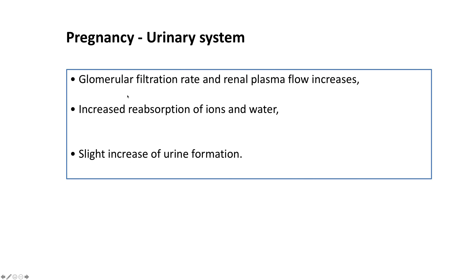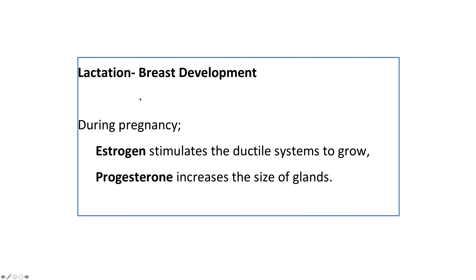In the kidneys, glomerular filtration rate and plasma flow increase during pregnancy. There is increased reabsorption of ions and water, and a slight increase in urine formation. The reason a pregnant woman urinates more frequently is because the growing baby pushes down on the bladder — not because there is a large increase in urine formation.